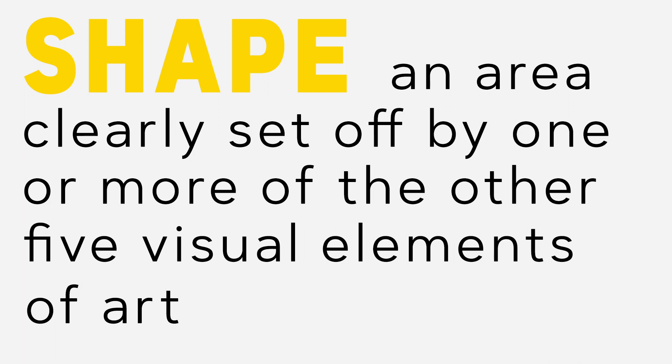To an artist, a shape is an area clearly set off by one or more of the other five visual elements of art. Shapes exist in two dimensions — they have length and width but not depth. Shapes are flat.